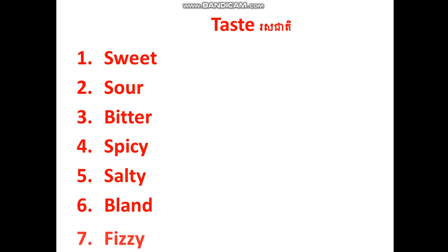And the last one, number seven: fizzy. Again — fizzy. Okay, very good. Now read all together again. One, two, three. Number one: sweet. Number two: sour. Number three: bitter. Number four: spicy. Number five: salty. Good. And number six: bland. Seven: fizzy. Okay, very good.